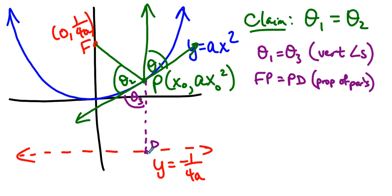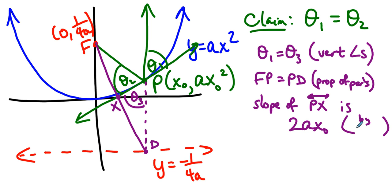But then we know that the slope of this tangent line, let's see, how do we want to bring this in? FD is a segment. That segment intersects the tangent line here at point X. The slope of line PX is 2AX naught by calculus.